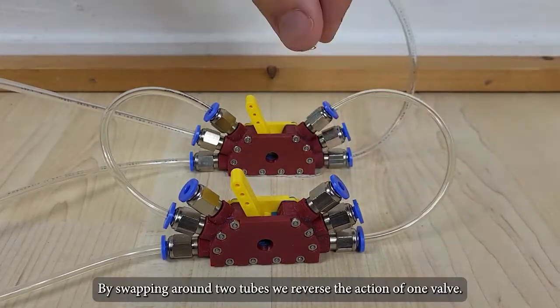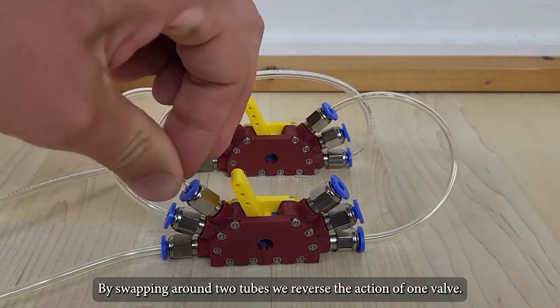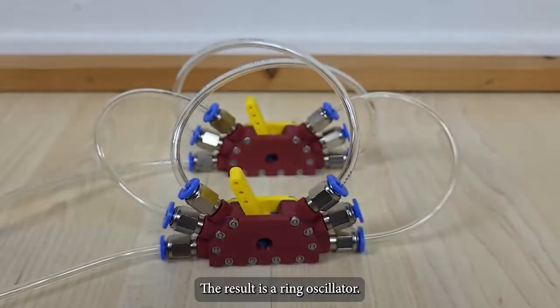By swapping around two tubes we reverse the action of one valve. The result is a ring oscillator.